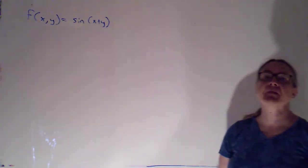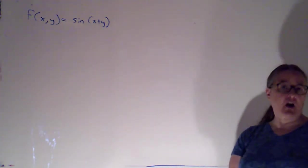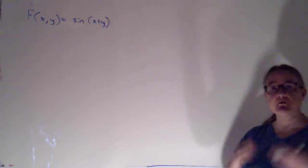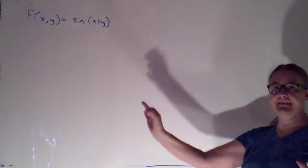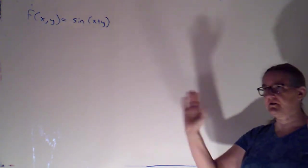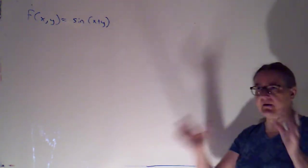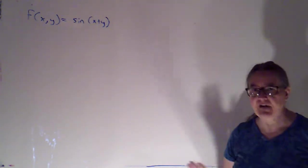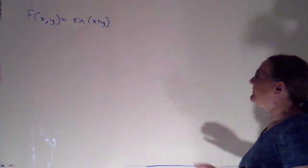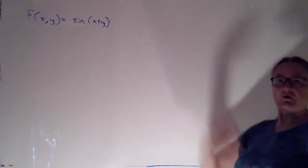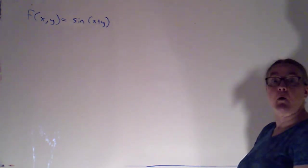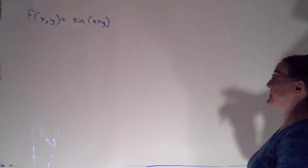I want to try and draw a contour plot for f(x, y) = sin(x + y). Generally, if I ask you to draw a contour plot, I will specify: draw the level curves f(x, y) = k for these values of k, so that you don't have to stress about how many to draw. But let's approach this one without those directions and strategize about what level curves we think are important.